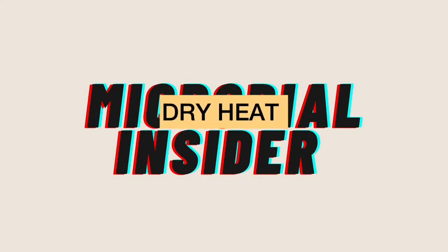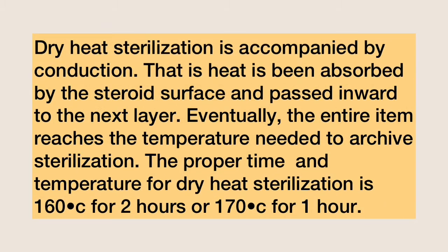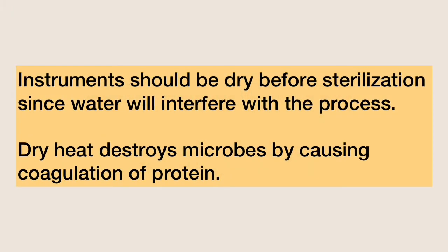Let's move on to the dry heat methods used in controlling microbial growth. Dry heat sterilization is accomplished by conduction — heat is absorbed by the outer surface and passed inward to the next layer until the entire item reaches the temperature needed for sterilization. The proper time and temperature for dry heat sterilization is 160 degrees Celsius for 2 hours, or 170 degrees Celsius for 1 hour. Instruments should be dry before sterilization, since water will interfere with the process. Dry heat destroys microbes by causing coagulation of proteins.